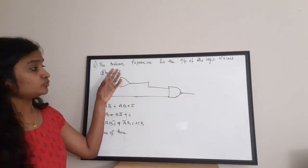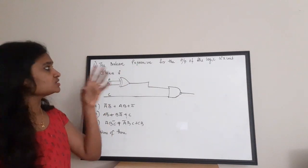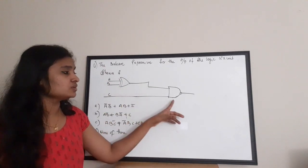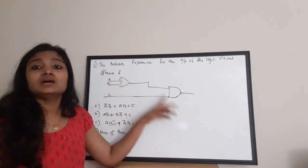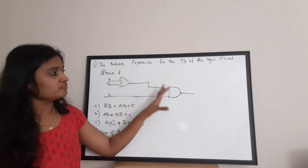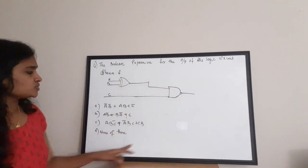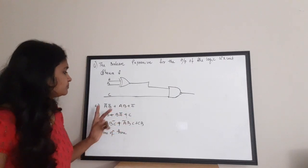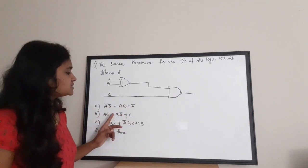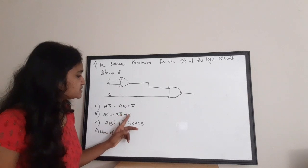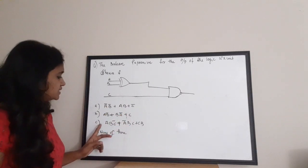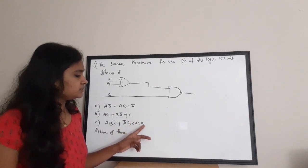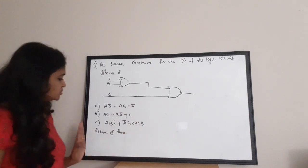The next question asks for the correct expression for the output of a logic circuit shown in the figure. The options are: A) Ā B̄ + AB + C̄, B) AB̄ + BĀ + C, C) ABC̄ + ĀBC + CB, D) none of these. There are two gates in the circuit: a XOR gate and a NAND gate.